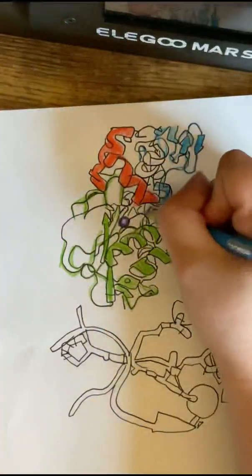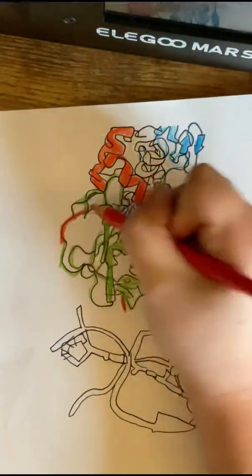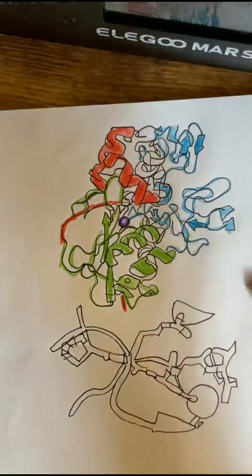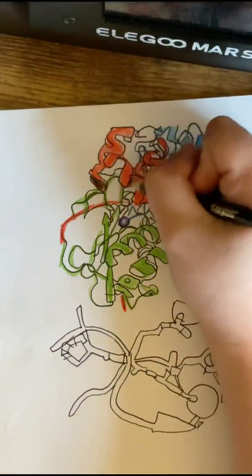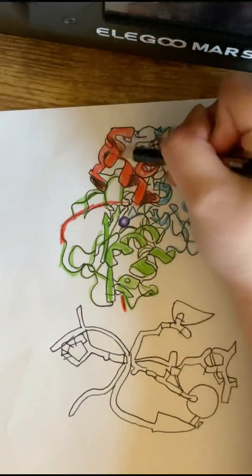Interestingly enough, they were actually described during tadpole tail metamorphosis. They were found in vertebrates, but since then we've also found them in invertebrates and plants.